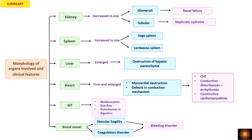To summarize the morphology: in the kidney, the organ size is reduced because vessel involvement causes ischemia of the parenchyma. Glomerular involvement leads to renal failure; peritubular deposition leads to proteinuria and nephrotic syndrome. When the spleen is involved it is enlarged, and there are two types: sago spleen, with deposition in the lymphoid follicles of the white pulp, and laudaceous spleen, with deposition between the sinusoids.